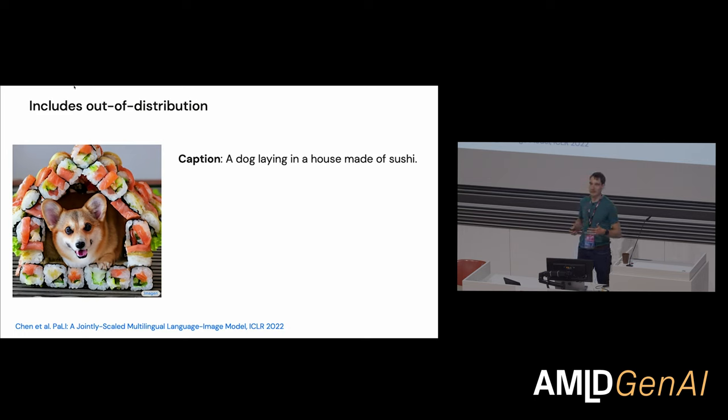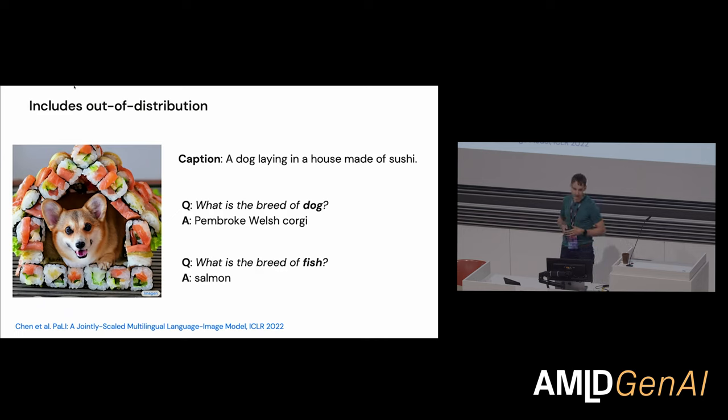You can probe the image a little bit just to check it can decompose things correctly. What is the breed of dog? Pembroke Welsh Corgi. Is it correct? I don't know. It's a generated image, but it seems kind of sensible. And what's the breed of fish? Salmon. So it's not thrown by weird context and this kind of thing.